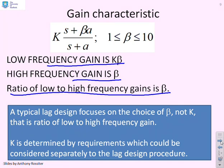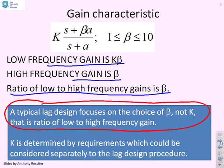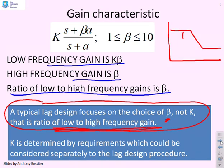Now here's something you'll need to be aware of in the long term. A typical lag design focuses on the choice of beta, not k. So the ratio of low to high frequency gains is the most important thing in the lag compensator. So if I do a simple lag sketch, you'll see the gain plot had this sort of shape. And here, this ratio, beta, is the thing that we're most interested in when we're doing a lag design. Now the value of k is actually going to be determined by other things which are not dependent on the lag design. But that will be obvious when you look at videos on lag compensation.